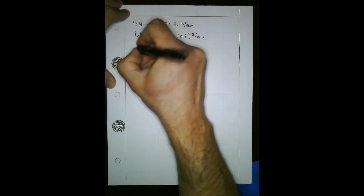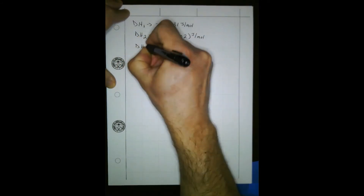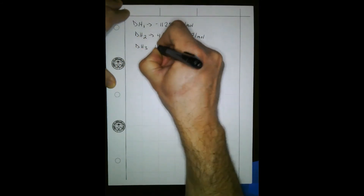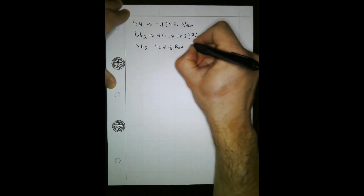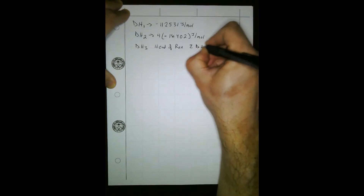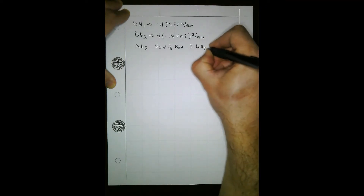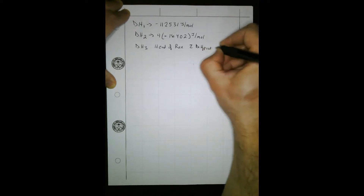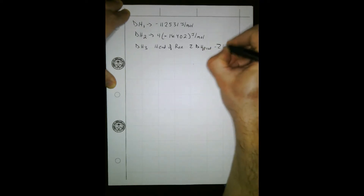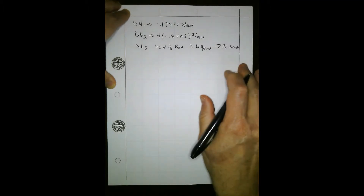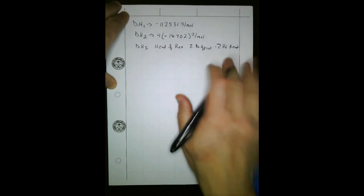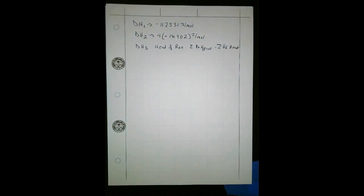Delta H3 is the heat of reaction. It's the sum of the heat of formation of products minus the heat of formation of the reactants. Products minus reactants — Hess's law. Hopefully you all are old hands at this.